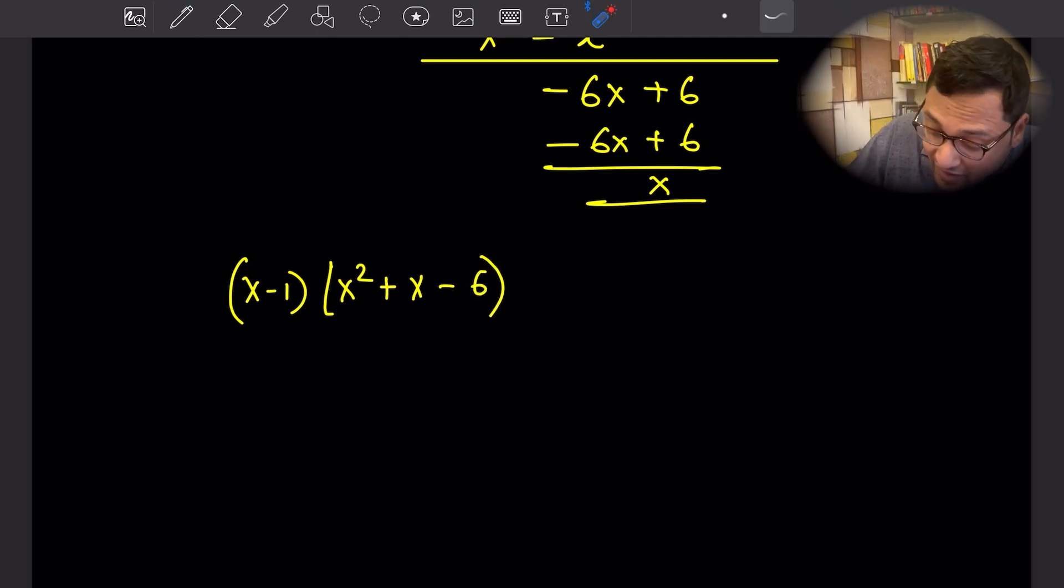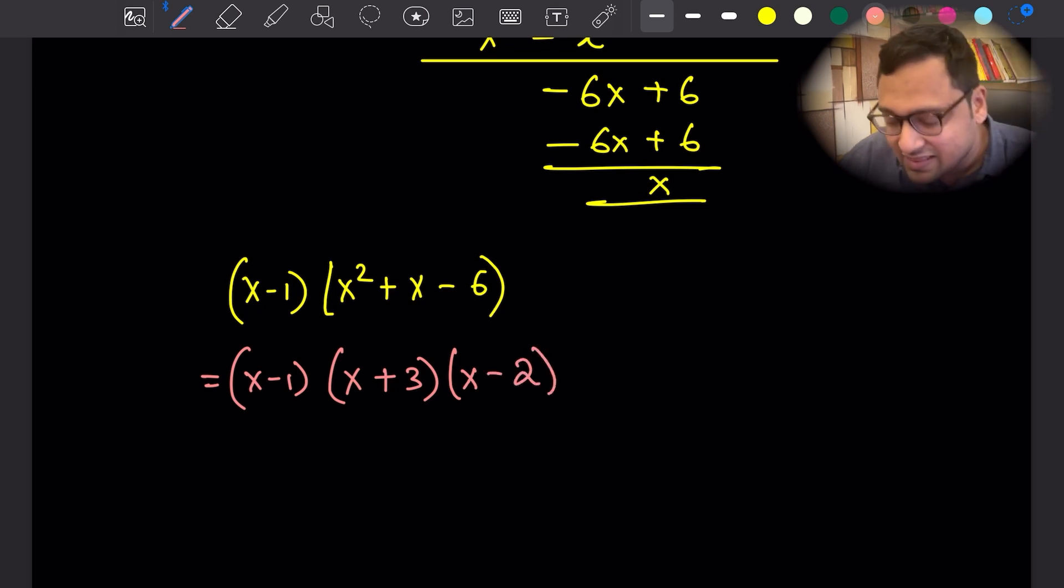We have a factorization. This is x minus one times x square plus x minus six. Now we can factor this thing further. It's a simple middle term factorization. This becomes x minus one times x plus three times x minus two. That's completely factorizing the cubic. Once you have completely factorized the cubic, you can easily read the roots from this factorization.